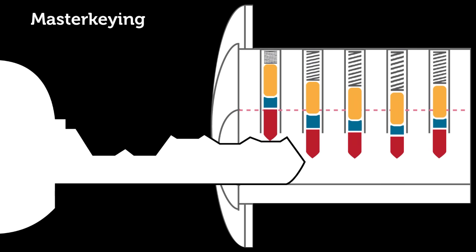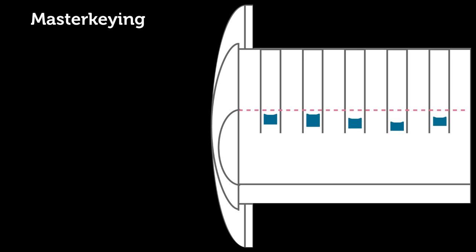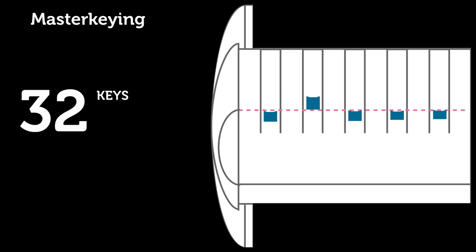But the clearest way to think about this is to simply do the math. Even in a five pin lock with just one master wafer per chamber, that's two possible shear lines per chamber, so two to the fifth. That's 32 possible keys, 32 possible shear lines, and 32 possible ways to pick this lock. And that's the most important takeaway: that master keying inherently weakens the security of your system.